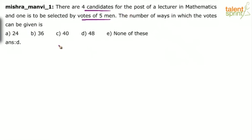How many voters are there? Five voters. The first voter can give his vote in how many ways? Four ways. The first voter can give his vote in four ways. He can give the vote to — let us assume the candidates are A, B, C and D. These are the four candidates. So the first voter can give the vote to A or B or C or D. He has got four choices, so he can do this job in four ways.